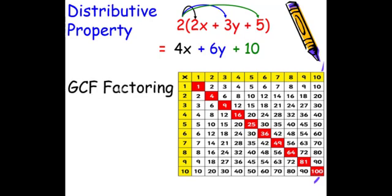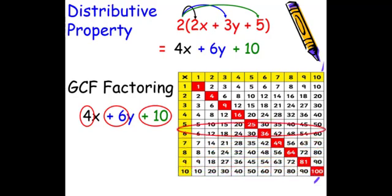The GCF factory will reverse this process. We're going to think of what numbers go into 4, 6, and 10. So we can use our timetables to look for this. And it doesn't matter if we look towards the rows or columns. When we take a look, we can see 4, 6, and 10 on this particular row of 2.